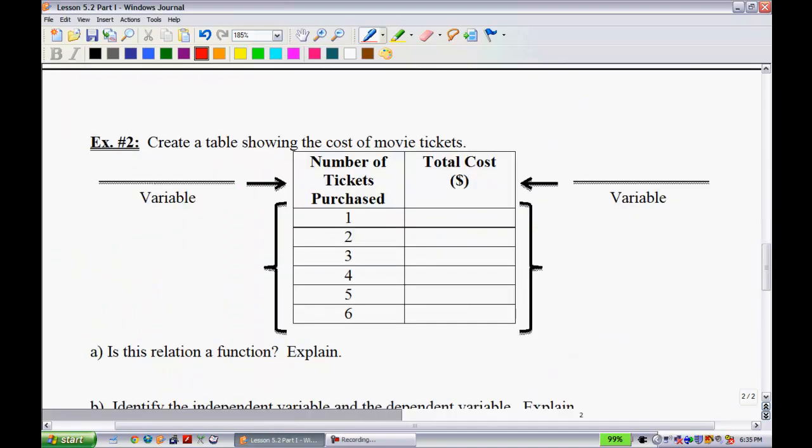Example two. It says create a table showing the cost of movie tickets. So let's go ahead and do that. Let's use a nice ballpark figure here. That for one ticket, the movie theater costs you $10. Two tickets then would therefore be $20, $30, $40, $50, and then $60 for six tickets.